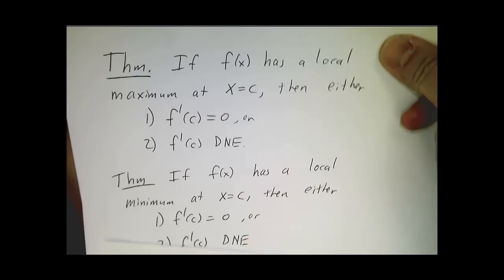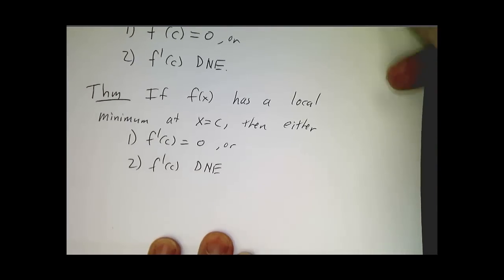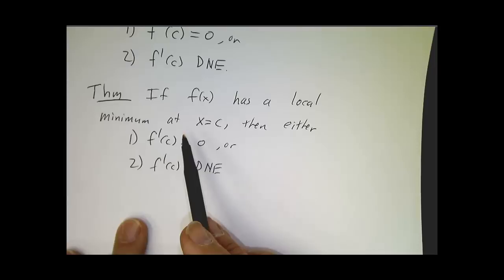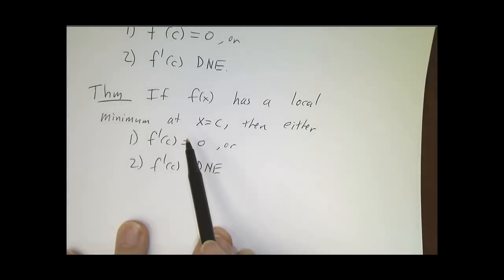And this exact same thing goes for local minimum. At the bottom of the arc, either the derivative is zero or the derivative doesn't exist.